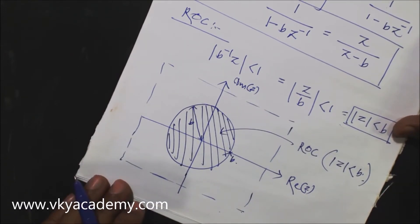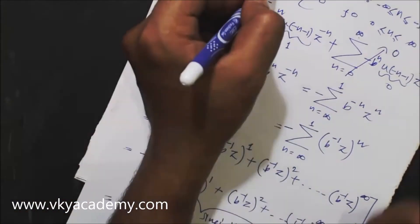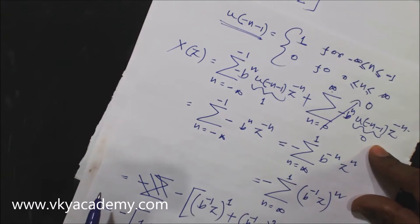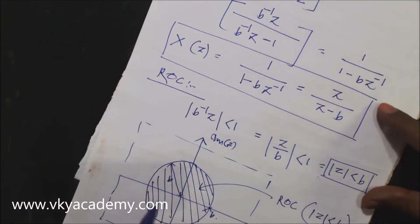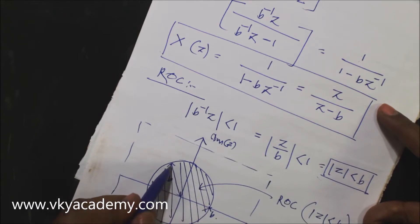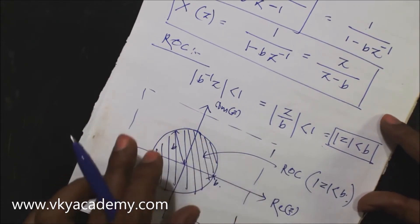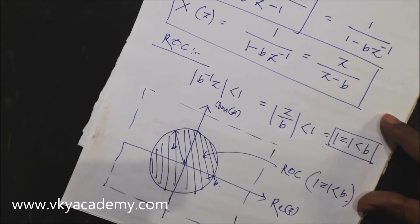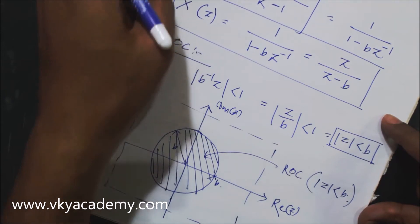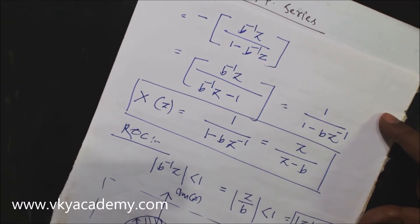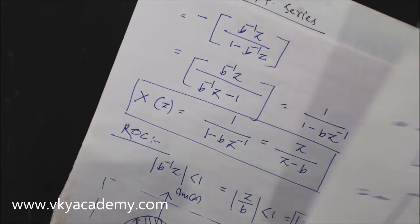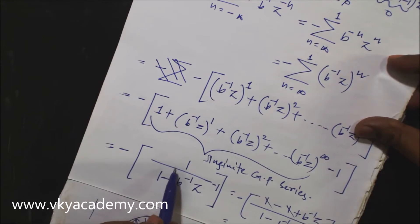We can conclude that u(-n-1) is a non-causal sequence. For a non-causal sequence of the form -b^n u(-n-1), the ROC is always inside the circle with radius b. For a causal sequence, the ROC is outside the circle with some radius. The ROC should always be calculated from the power series, not assumed from the Z-transform expression alone.